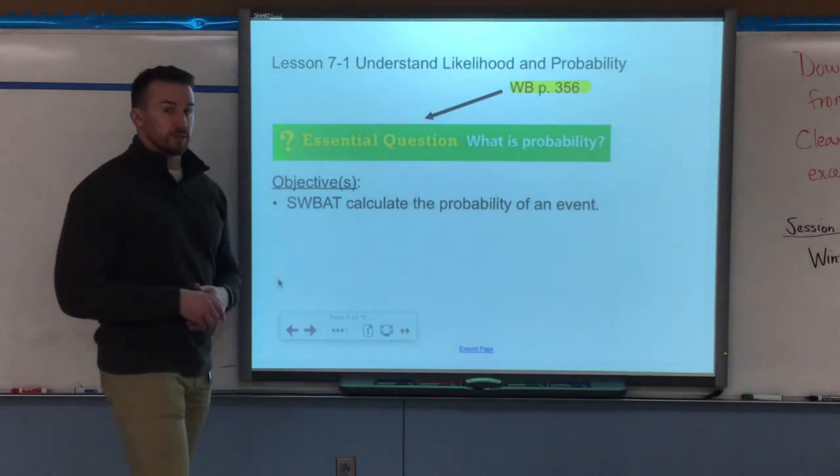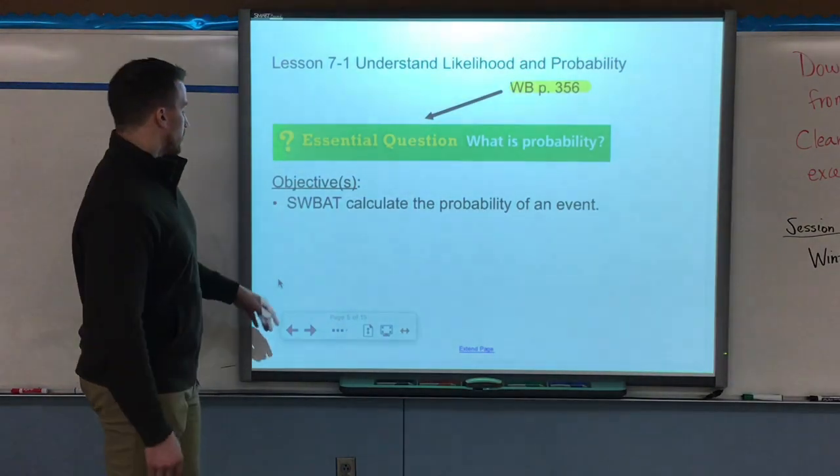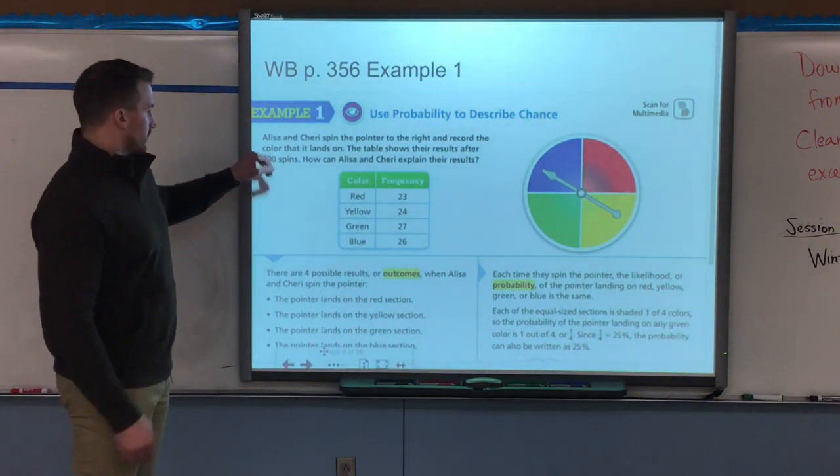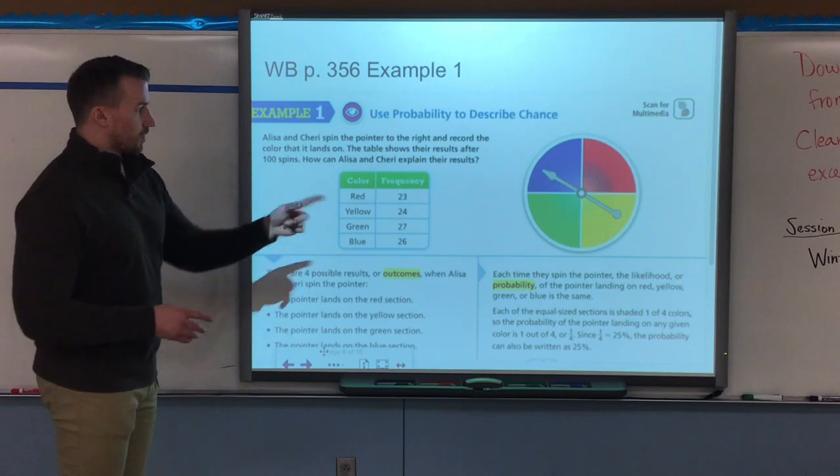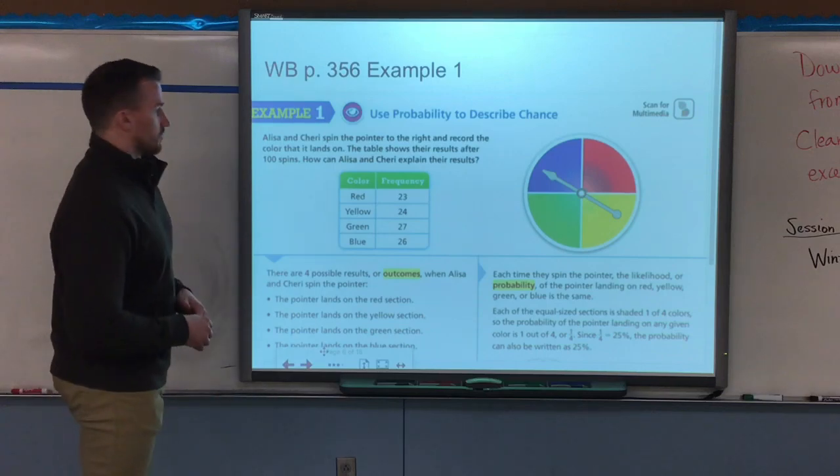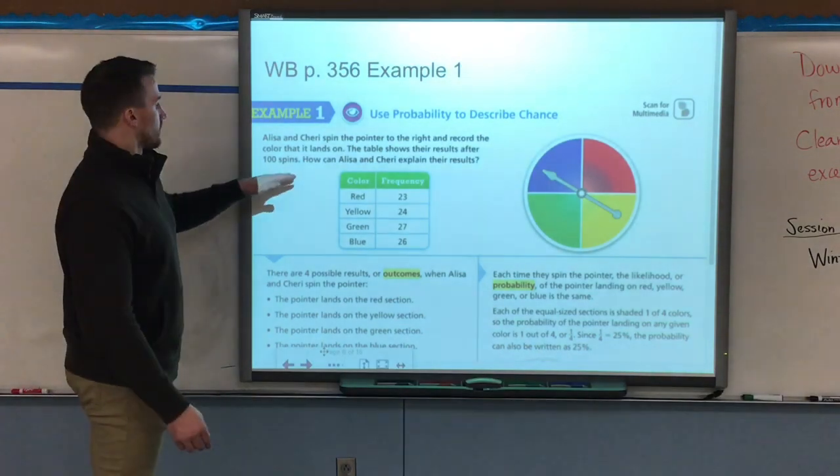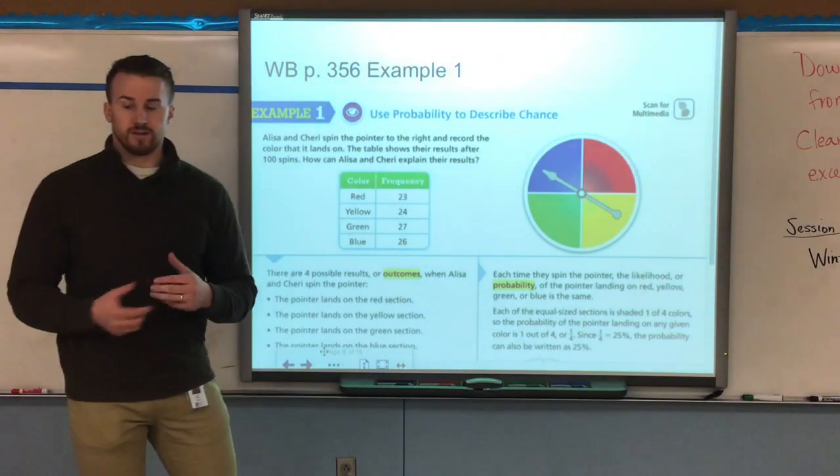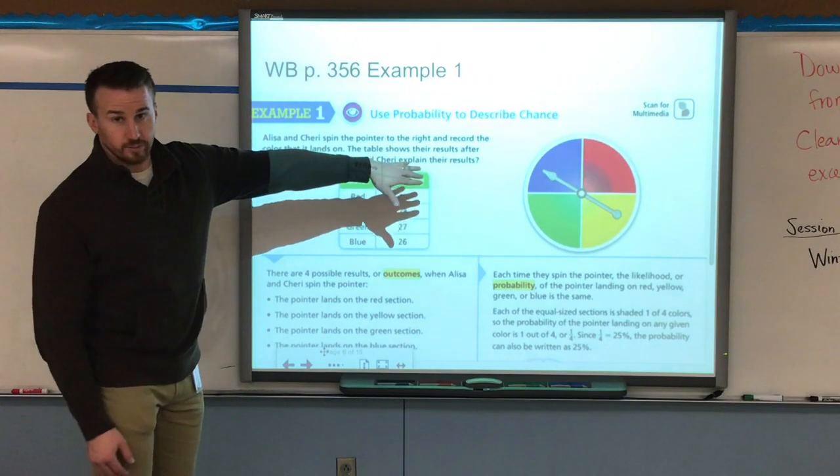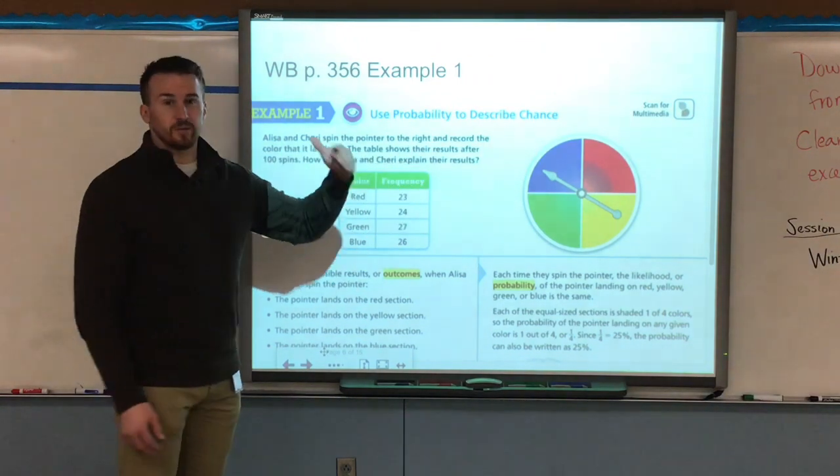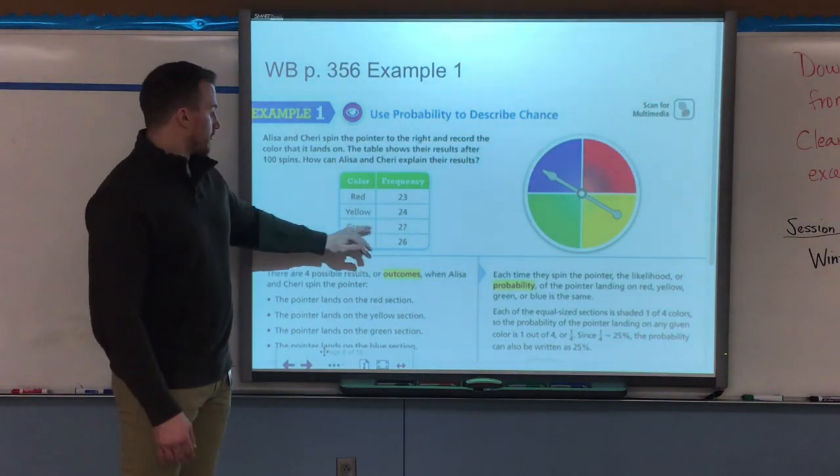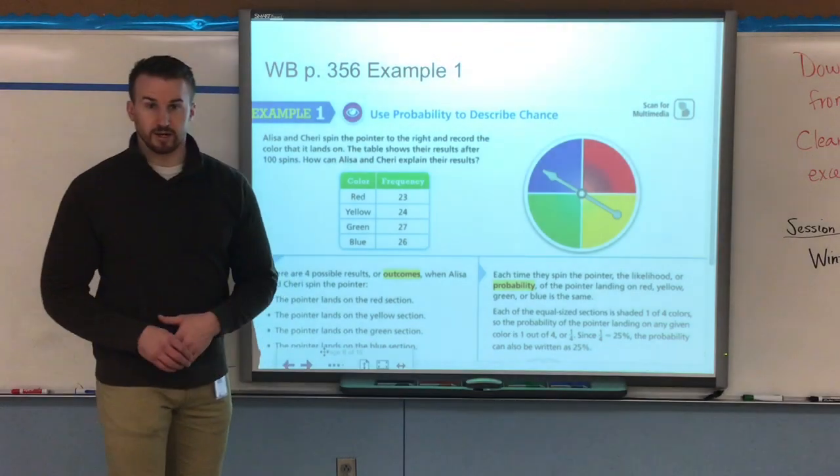So here we go. Our essential question is what is probability? Example one in your workbooks says that Alyssa and Jerry spin the pointer to the right which has colors blue, red, green, yellow and record the color. The table shows the results after 100 spins. We're looking at 100 spins of that spinner and the frequency means how many times it landed on that color. So red 23, yellow 24, green 27, and blue 26 for a total of 100 spins.